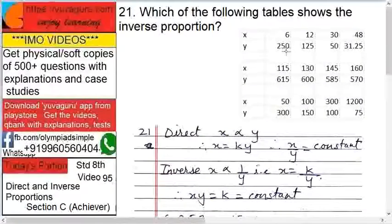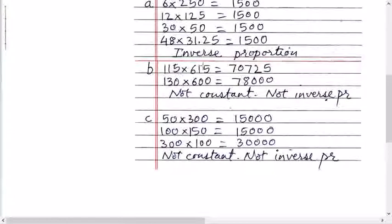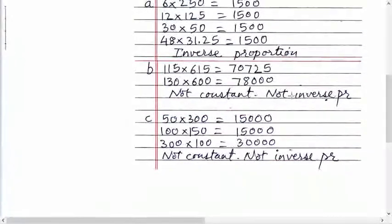Now what about table B? The values are 115, 130, 145, 160 for X and 615, 600, 585, 570 for Y. Multiply them: 115 times 615, 130 times 600, and so on. For this multiplication, you should use Vedic Maths - I have separate videos for that. These products are not constant, so X into Y is not equal to a constant. That's why this is not inverse proportion.